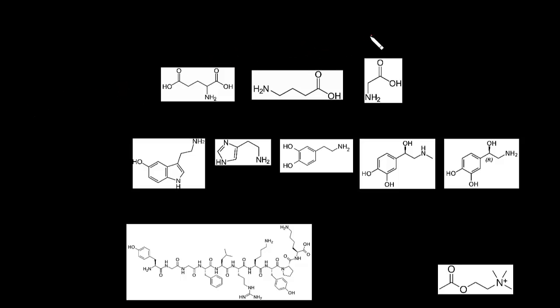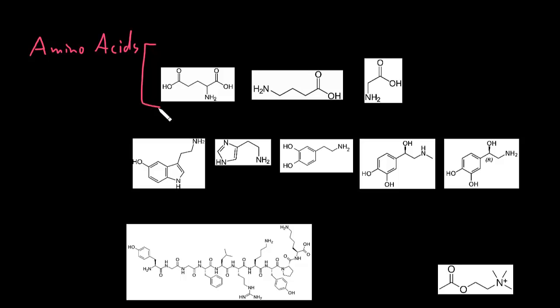The first category of neurotransmitters is the amino acids. Amino acids have an amino group and a carboxylic acid group. There are lots of different types of amino acids, but just a few of them function as neurotransmitters in the nervous system.